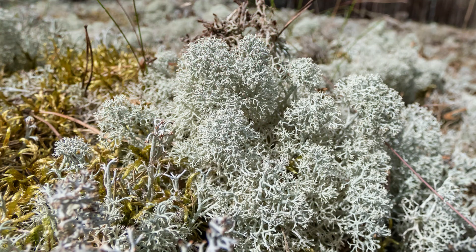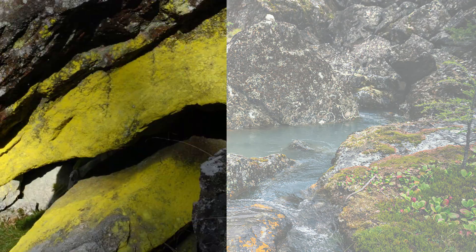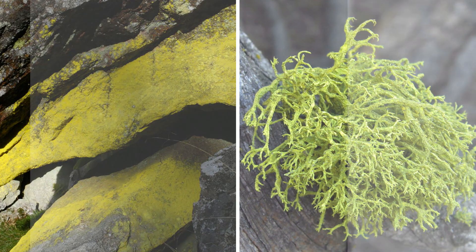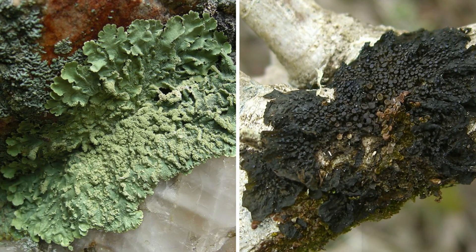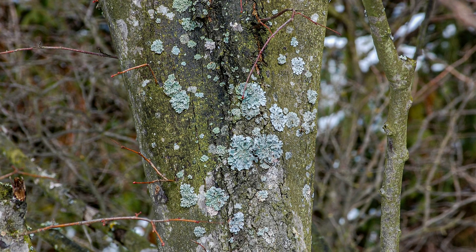Lichen is an example of a very interesting mutualistic relationship between fungi and algae. If you travel almost anywhere that has rocks or trees, you will find lichen. Lichen come in all kinds of shapes and sizes. The fungi provides structure, and the algae, by practicing photosynthesis, provides the food. As a result, the lichen can survive in places that neither the fungi nor the algae could alone.